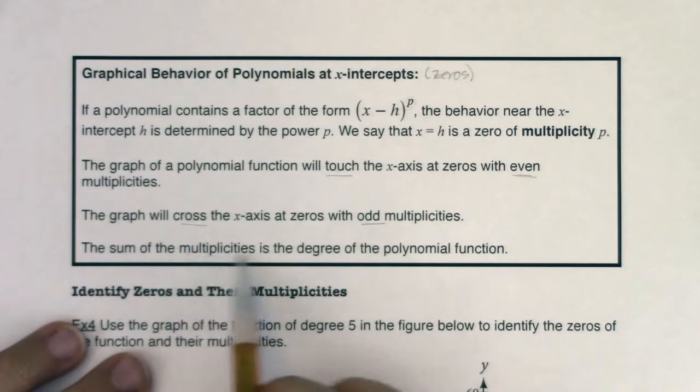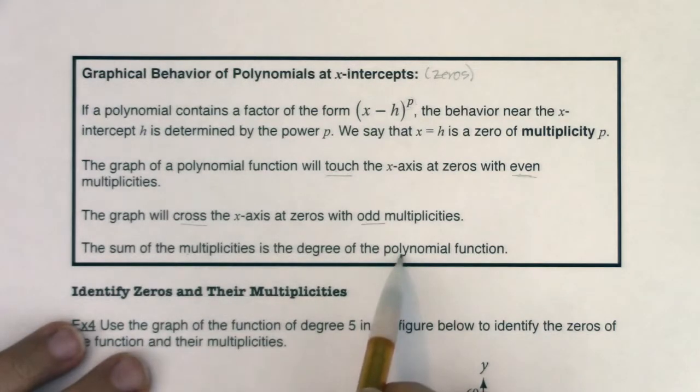And then there's this nice little added piece that the sum of the multiplicities has to be equal to the degree of the polynomial function.